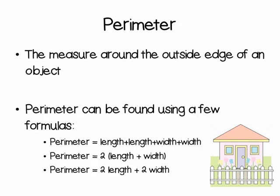Perimeter is the measure around the outside edge of an object. Perimeter can be found using a few different formulas. For example, perimeter equals length plus length plus width plus width. Or, perimeter equals 2 times length plus width. Or, perimeter equals 2 times length plus 2 times width.